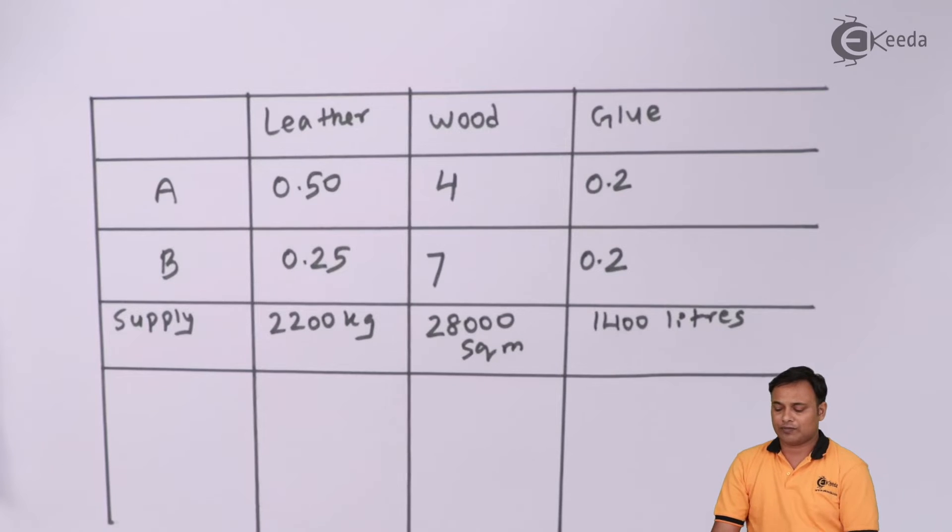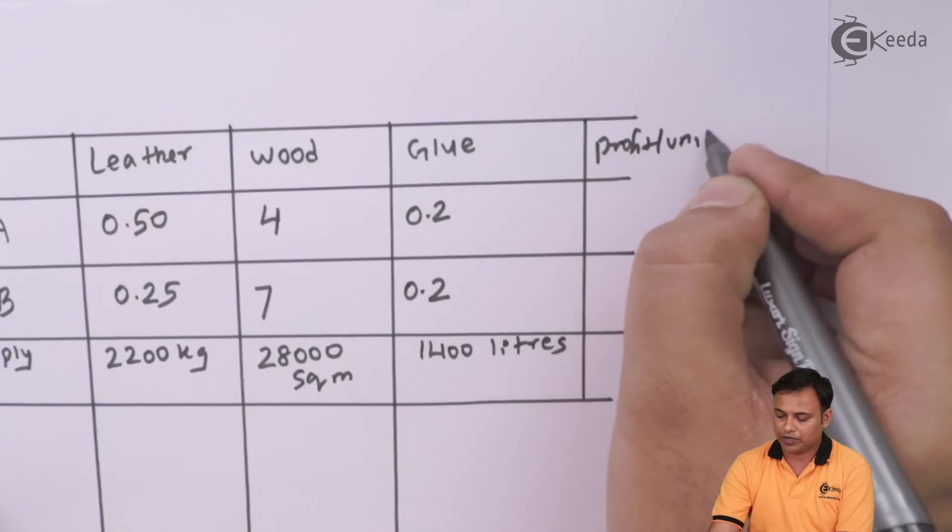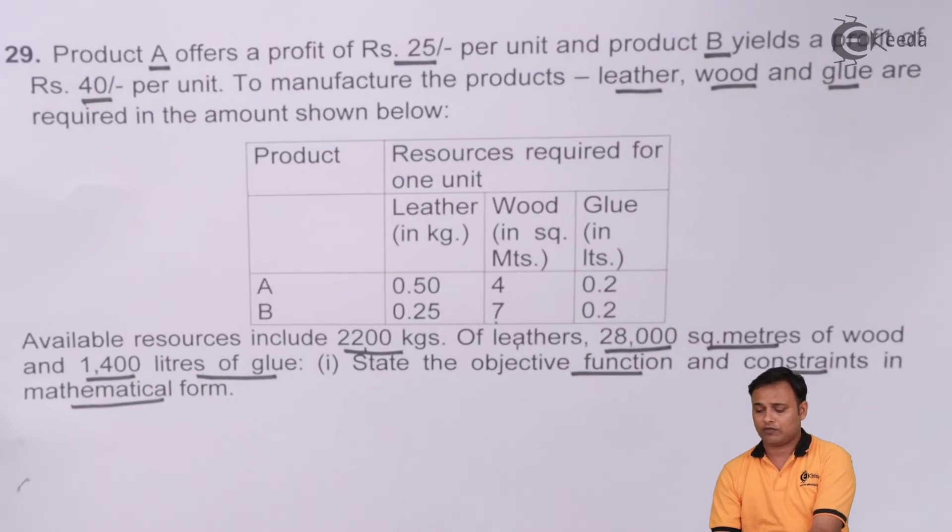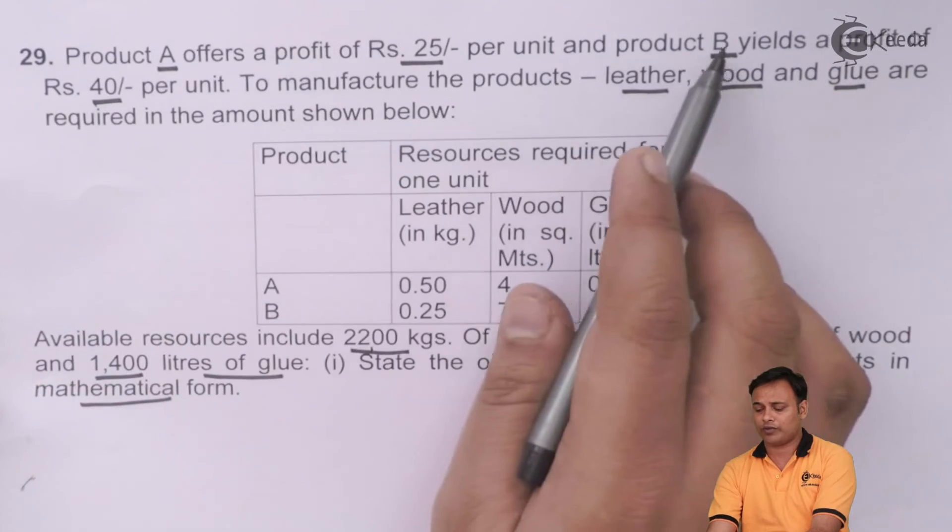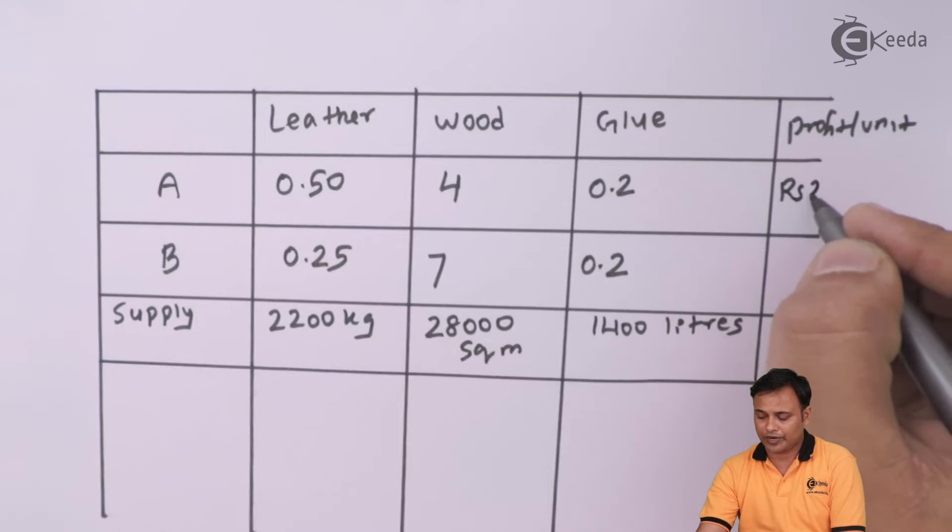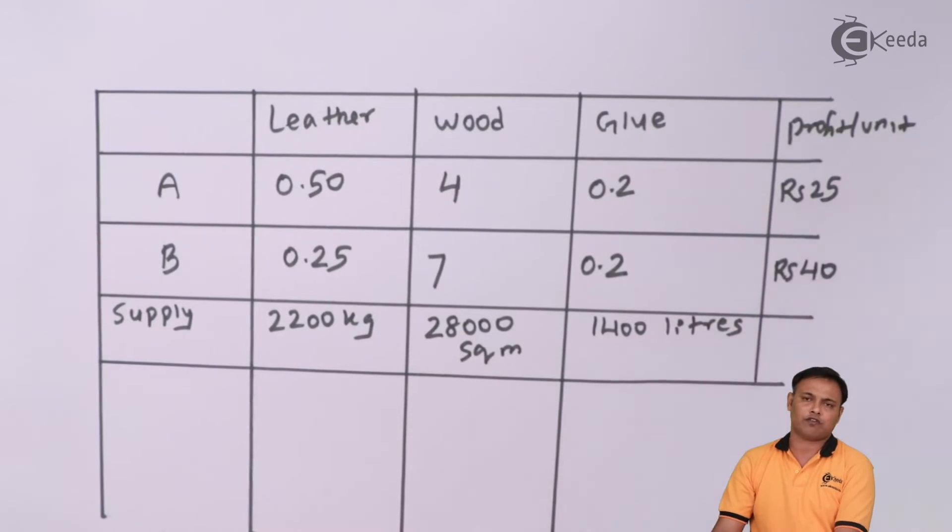And then we are given the profit per unit, which I can note down. My profit per unit for A is 25 and for B it is 40. A makes rupees 25, B makes rupees 40.